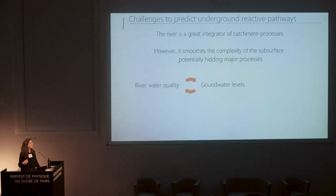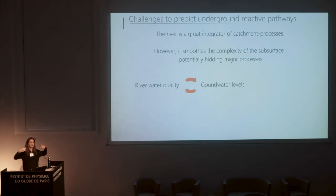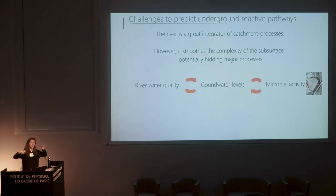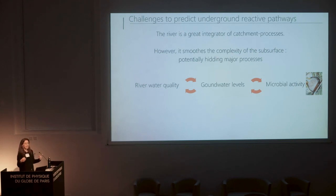We've seen with Jenny this morning that using data in a river is really useful because it's a great integrator of every process that occurs at the catchment scale. However, this view of looking at the river may also smooth the complexity of the subsurface and potentially hide major processes. For instance, an increase in flow related to higher groundwater levels can be associated with a change in water chemistry, but when groundwater levels are higher we can also see an increase in oxygen in the ground that would yield higher microbial activity. So it's not easy to decipher between the different processes that occur in the ground and that can yield changes in water chemistry.